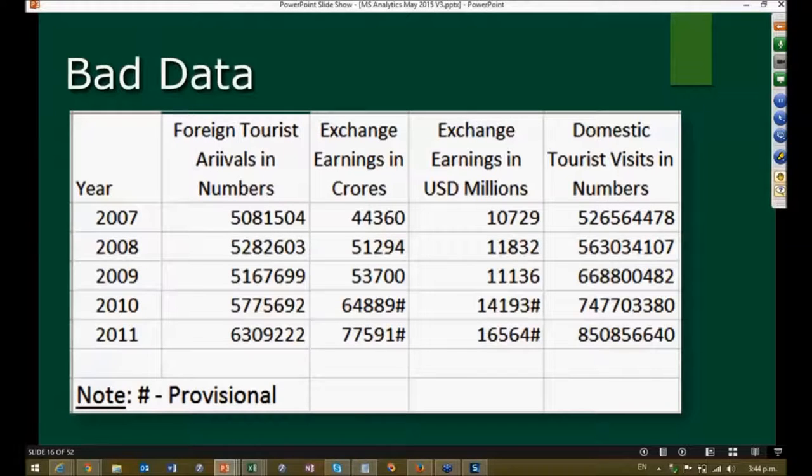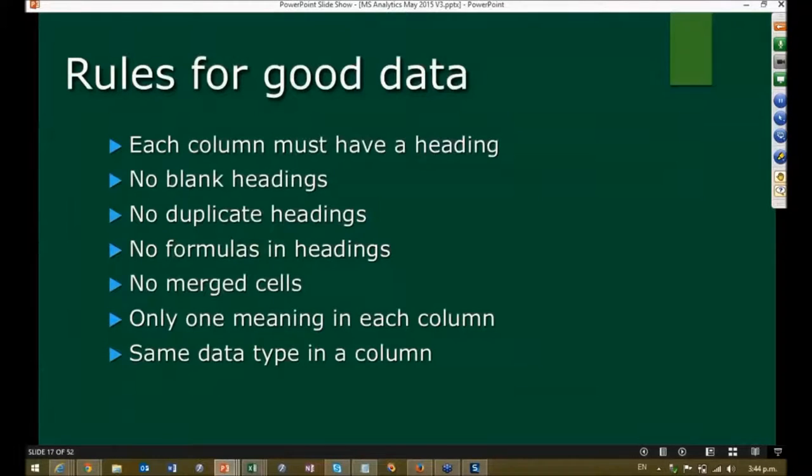So here are very simple rules for checking whether the data you have received is good or bad. Some of you may be technical people—in technical terms, it's called normalization, but I don't want to confuse users with unwanted jargon. When you get the data, the concept is simple: look at it, apply all these principles. If any of them is missing or wrong, that means the data is bad.